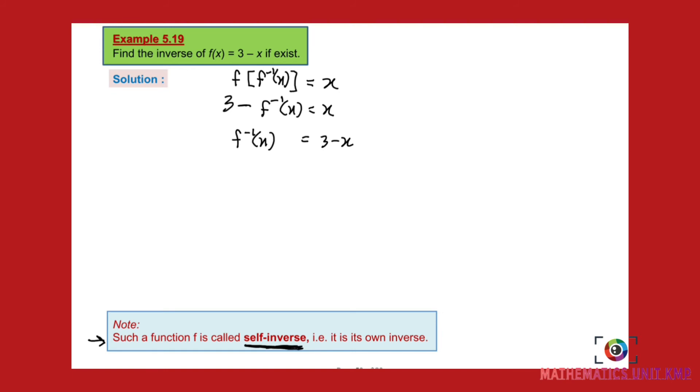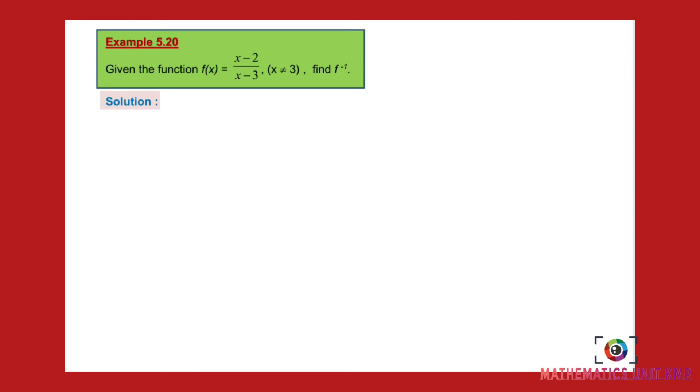Do you understand that, everyone? Example 5.20: Given the function f(x) equals x minus 2 over x minus 3, x should not be equal to 3. Find f inverse. Like I said before, what is the first step? You write the property.